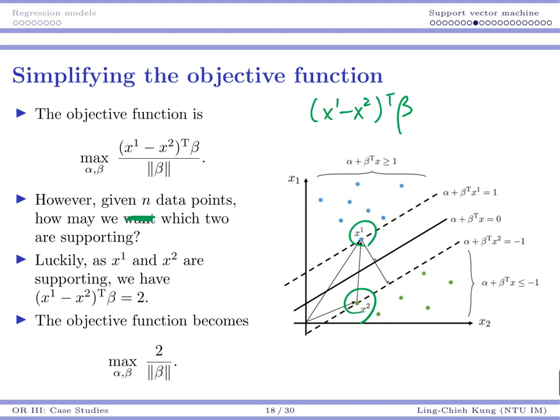So how may we know which two points are really the support vectors? We have no idea which two points are doing the correct supporting. So we should somehow simplify or reformulate the objective function, because you cannot leave several unknown things in your objective function.